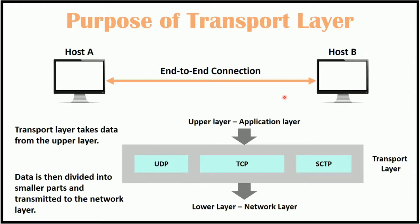Now we will discuss the need for a transport layer. In the layered architecture of the network model, one whole network process is divided into small tasks. Each small task is assigned to a particular layer which works dedicatedly to process only that task. Every layer does only specific work. If a task is initiated by the topmost layer, it is passed down to the layer below it for further processing.